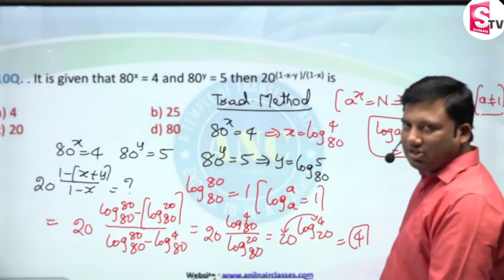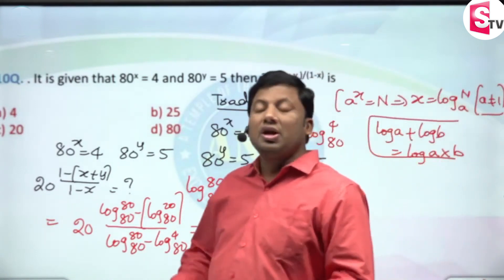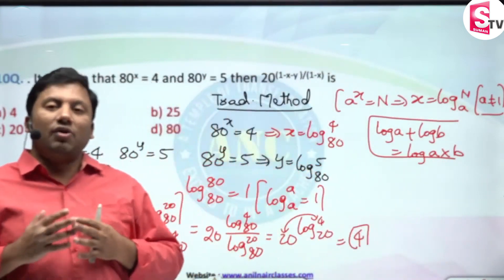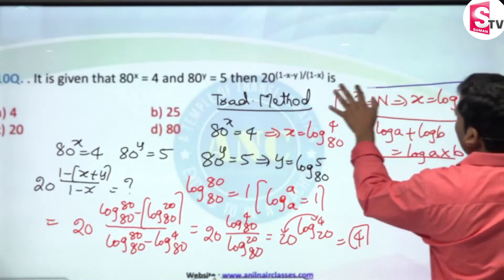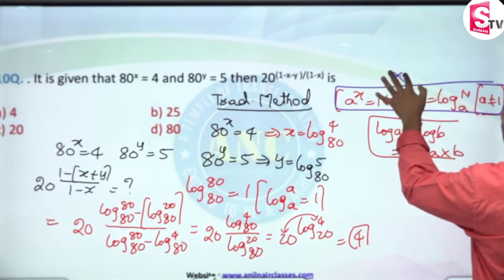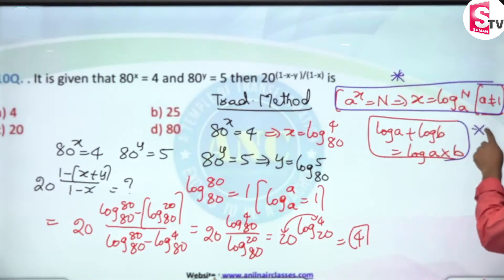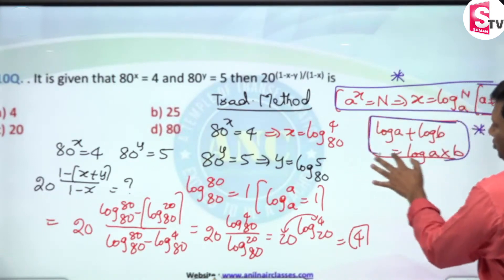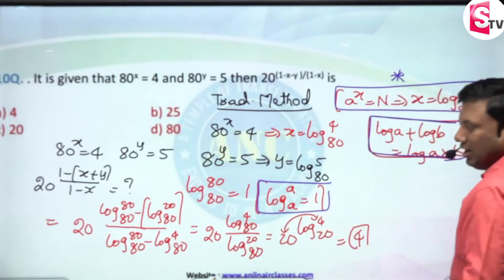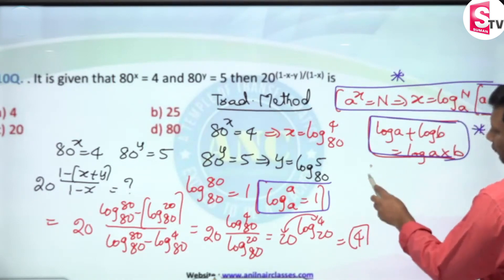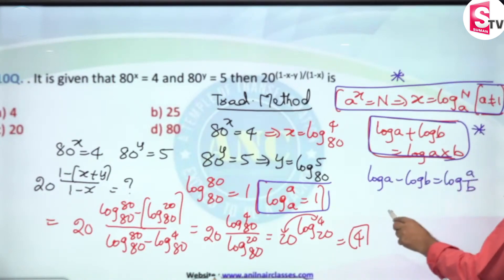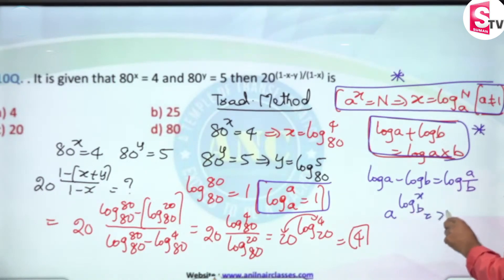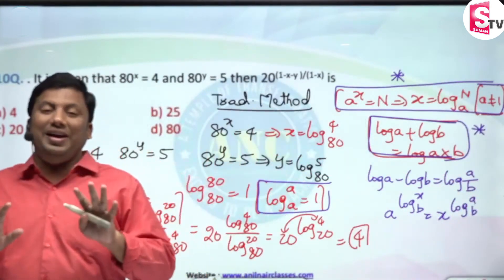This is a very beautiful question where we used many logarithmic identities. The five identities used are: (1) a^x = n implies x = log n base a; (2) log a + log b = log(a×b); (3) log a base a = 1; (4) log a - log b = log(a/b); and (5) a^(log x base b) = x^(log a base b). This question can be solved if you know these 5 logarithmic identities.